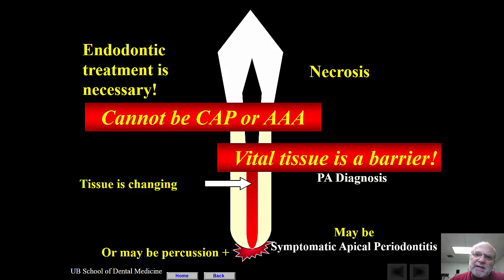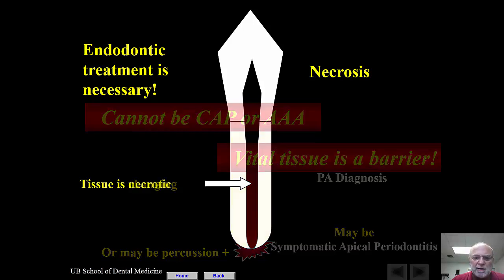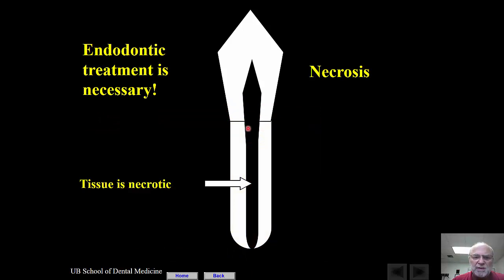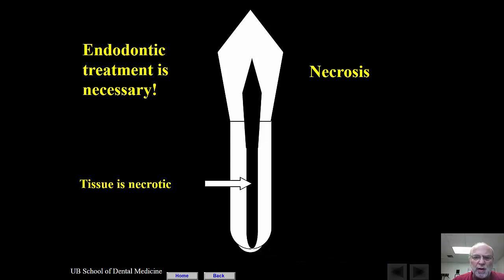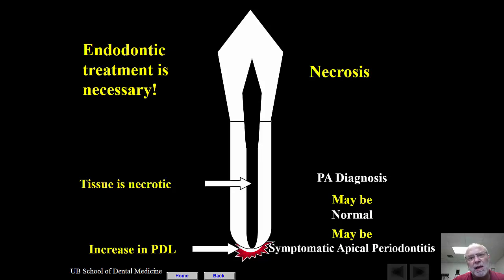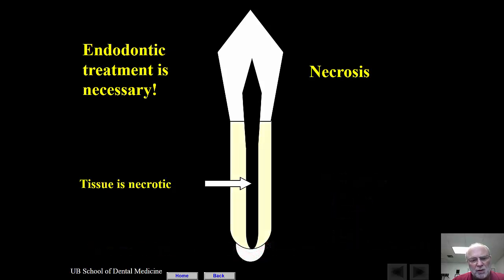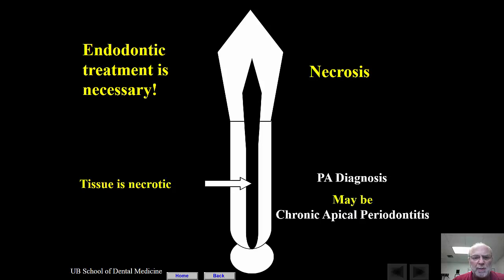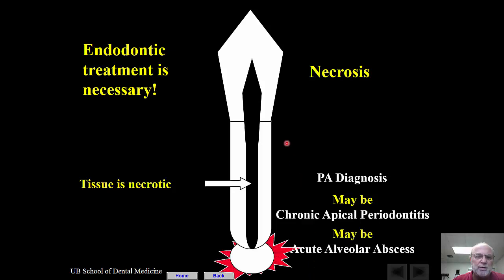In a more advanced situation, the tissue becomes fully necrotic. The apex could still be normal, or you could have an increase in the periodontal ligament space. The peri-apical diagnosis may still be normal, or it could be symptomatic apical periodontitis. Over time you can have development of a peri-apical lesion, in which case the peri-apical diagnosis may be chronic apical periodontitis or even acute alveolar abscess — and in that case you need to do a root canal because of the tooth being necrotic.